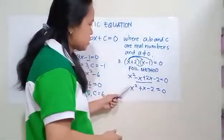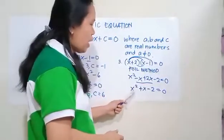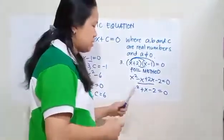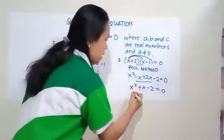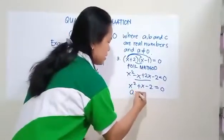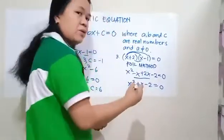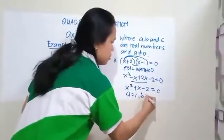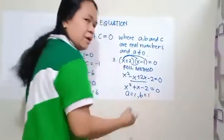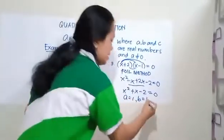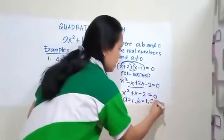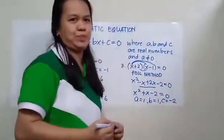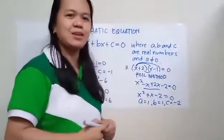Now let us go back to this equation and find the values of A, B, and C. The value of A is 1. The value of B is also 1. And the value of C is negative 2. Okay, that's all. Thank you.